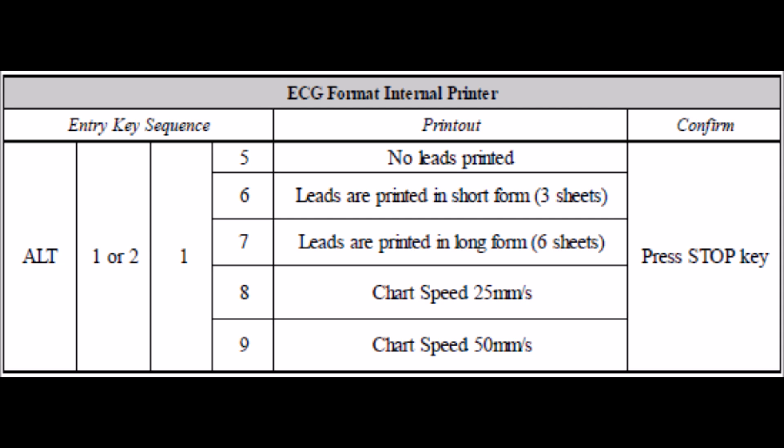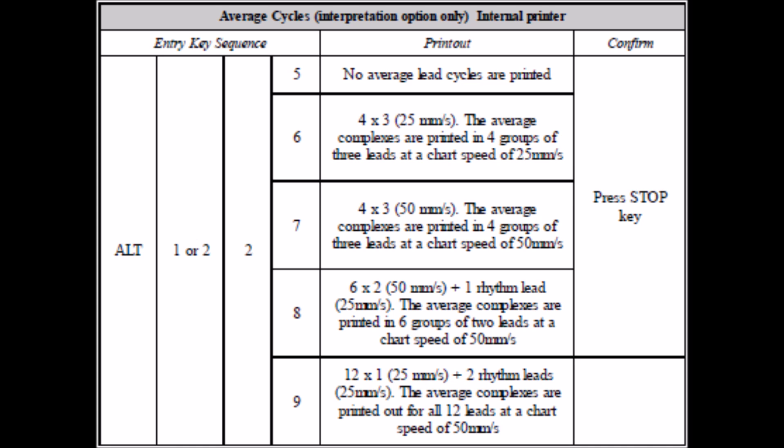To change the settings of format 1 and 2 of the ECG printout, use the following codes. To change the settings of the printout of the average cycles in format 1 and 2, use the following codes.